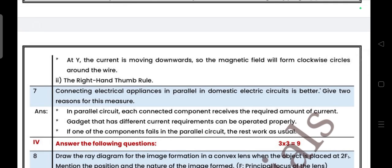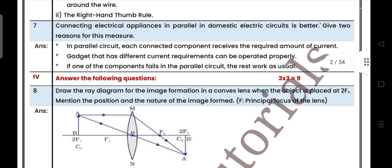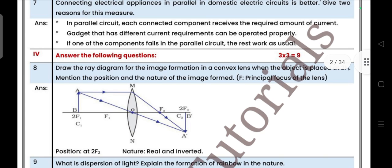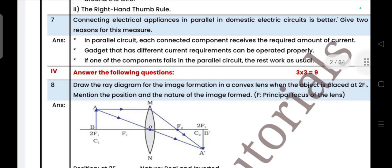At Y, it's moving downwards, the magnetic field means it is clockwise around the wire. Next question number 7: when connecting electrical appliances in parallel in domestic electric circuits is better, give reason. In parallel circuit, each connected component receives the required amount of current. Gadgets that have different current requirements can be operated properly. If one of the components fails in the parallel circuit, the rest works as usual.